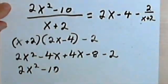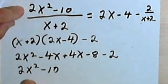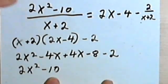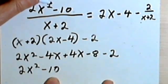And looking at the original problem, I find that the answer I just got, 2x squared minus 10, is the same as the numerator of my original problem.